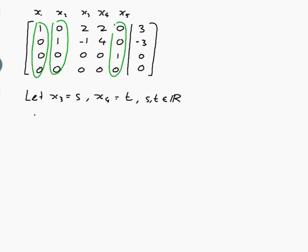So we have x1 + 2x3 + 2x4 = 3, and x3 is really s, and x4 is really t. That's the first row of my matrix. So therefore x1 = 3 - 2s - 2t.